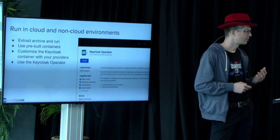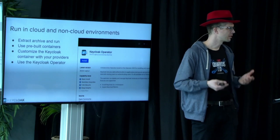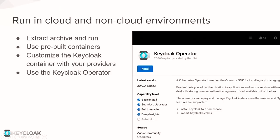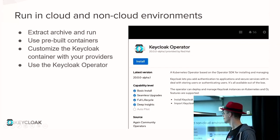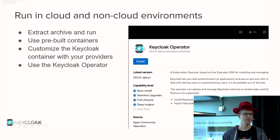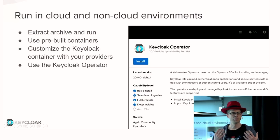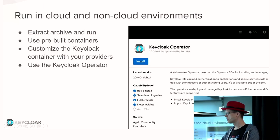To run it in cloud and non-cloud environments: in a non-cloud environment, you download an archive, unzip it, add a JDK, and you're ready to run Keycloak. In an OpenShift or Kubernetes environment, you use pre-built containers that we provide. You can customize and enhance these containers — put in your own extensions, bake in the configuration so the container starts faster — and then hand either the original or customized image to the Keycloak operator.